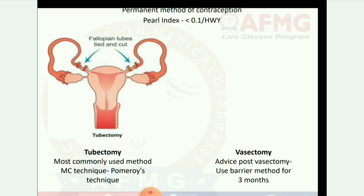Permanent method of contraception: pearl index less than 0.1 HWY. Tubectomy and vasectomy. Tubectomy is the most commonly used method; most common technique is the Pomeroy technique — cutting the fallopian tubes and tying the cut ends. Vasectomy: advised post-vasectomy to use barrier method for 3 months.